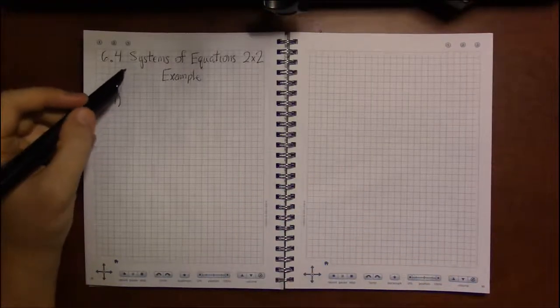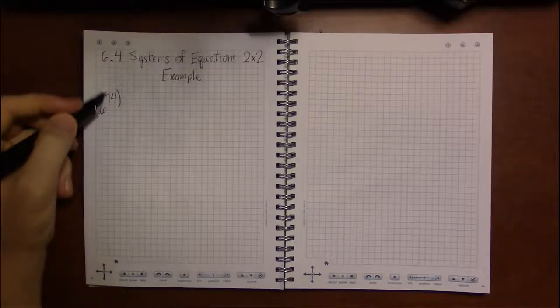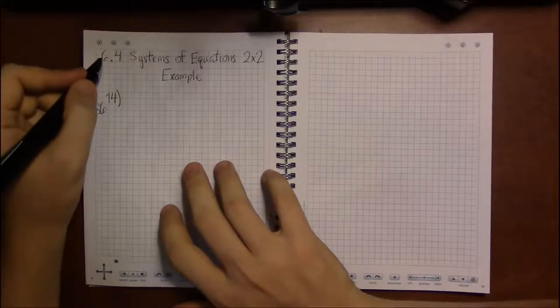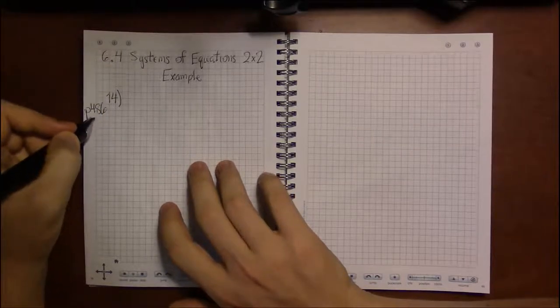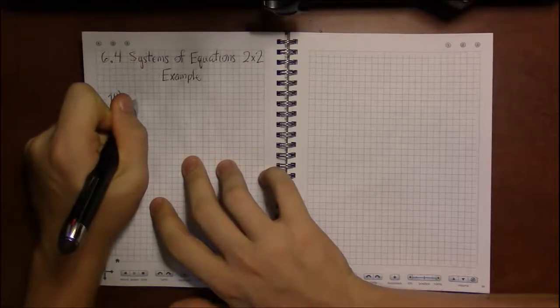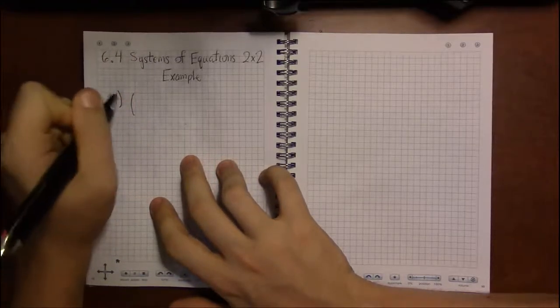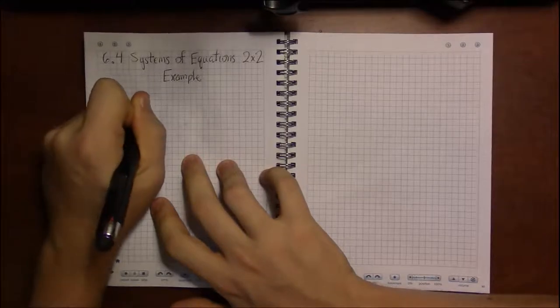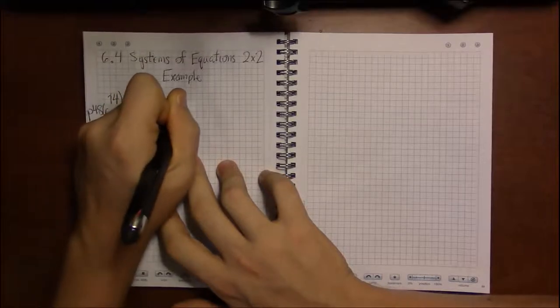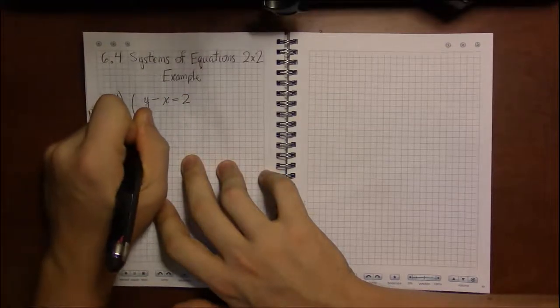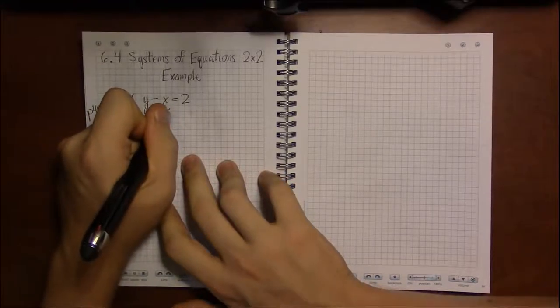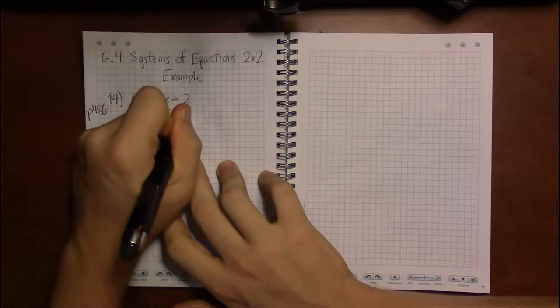Let's look at some examples of solving systems of equations by the method of elimination. I'm looking at exercise 14 in section 6.4, which is on page 486. Problem 14 has the following system: y minus x equals 2, followed by the equation y plus x equals 9.